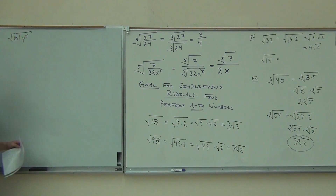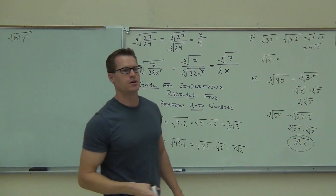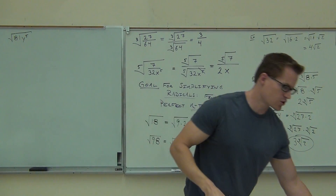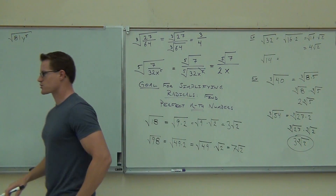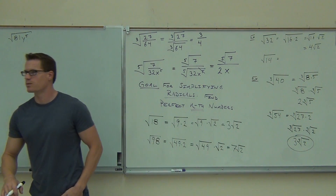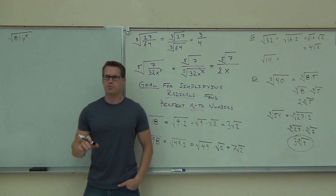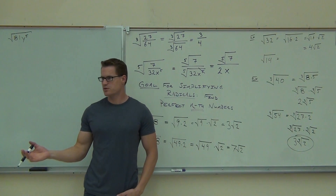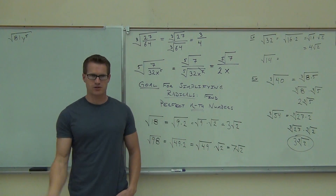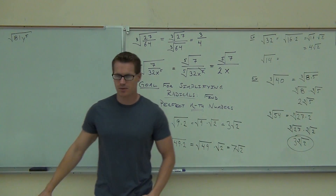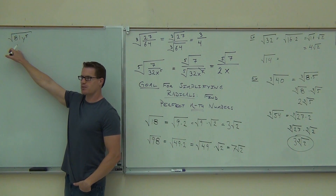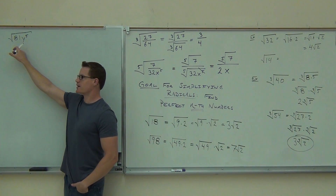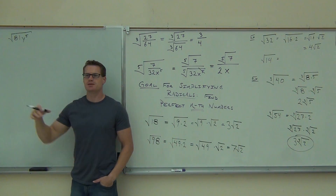Square root of 81y to the fifth. We're going to be looking for perfect square roots — perfect square numbers. 81, we got that. Square root of 81 is what? Now, the square root of y to the fifth — that's the problem.